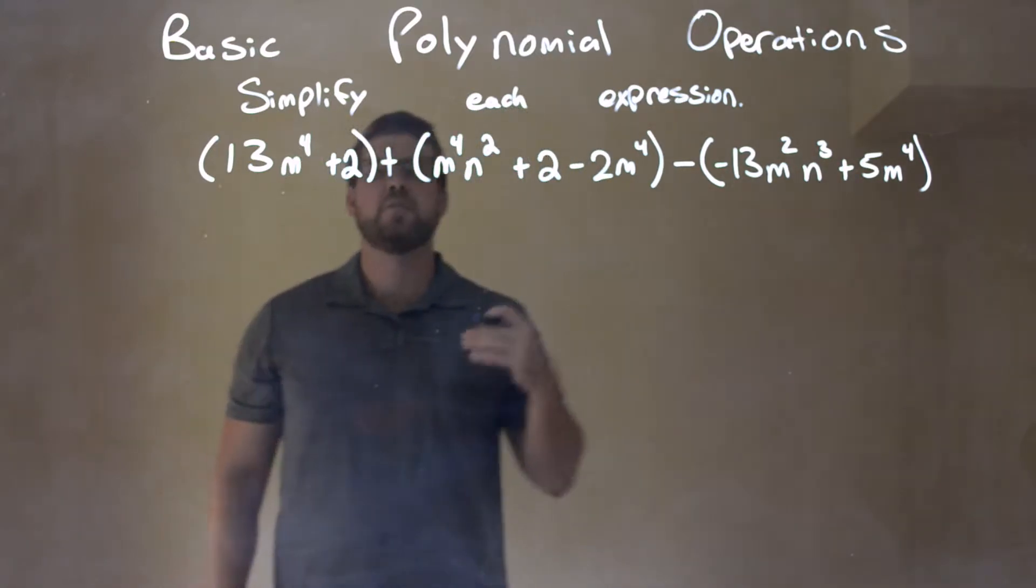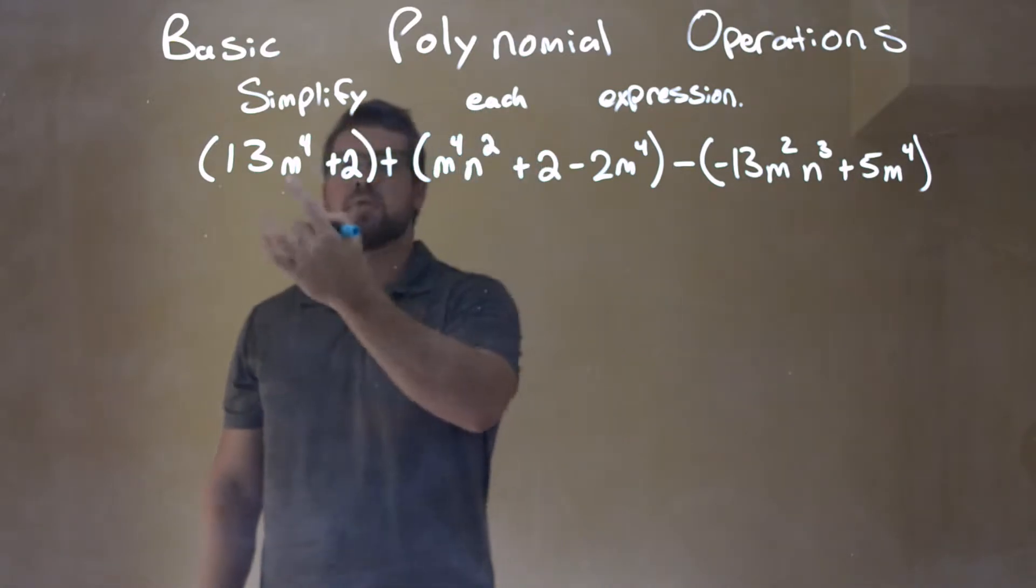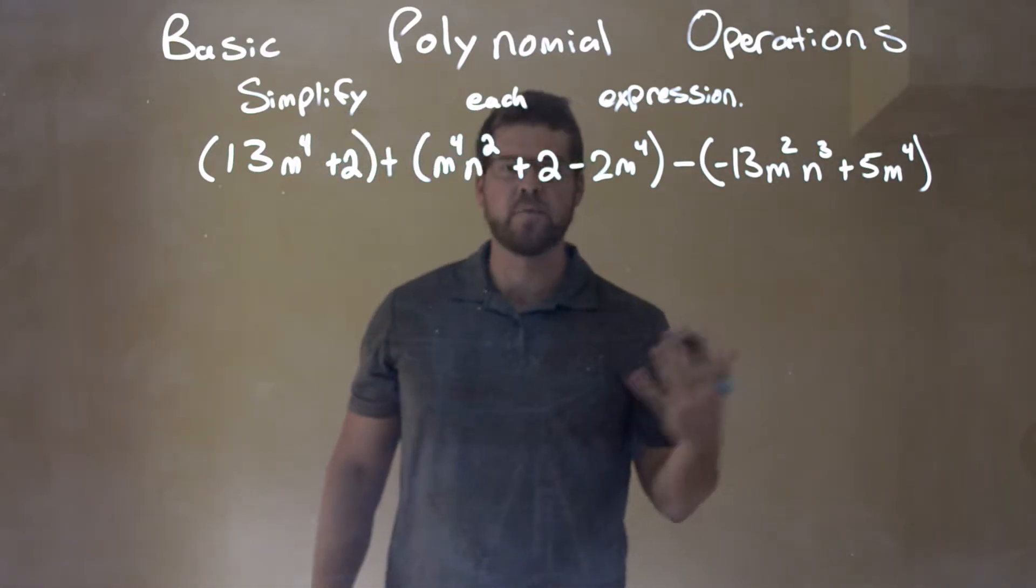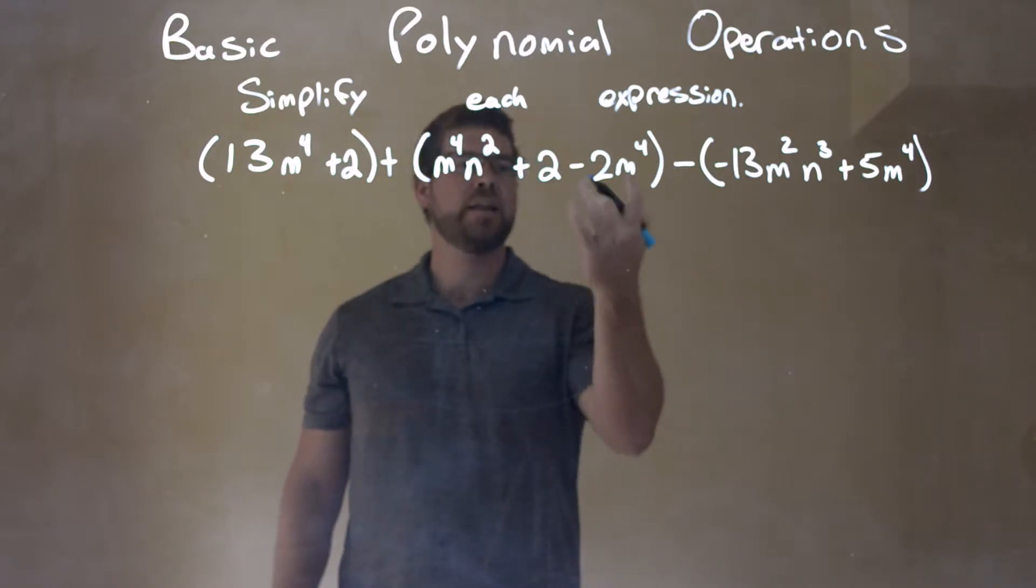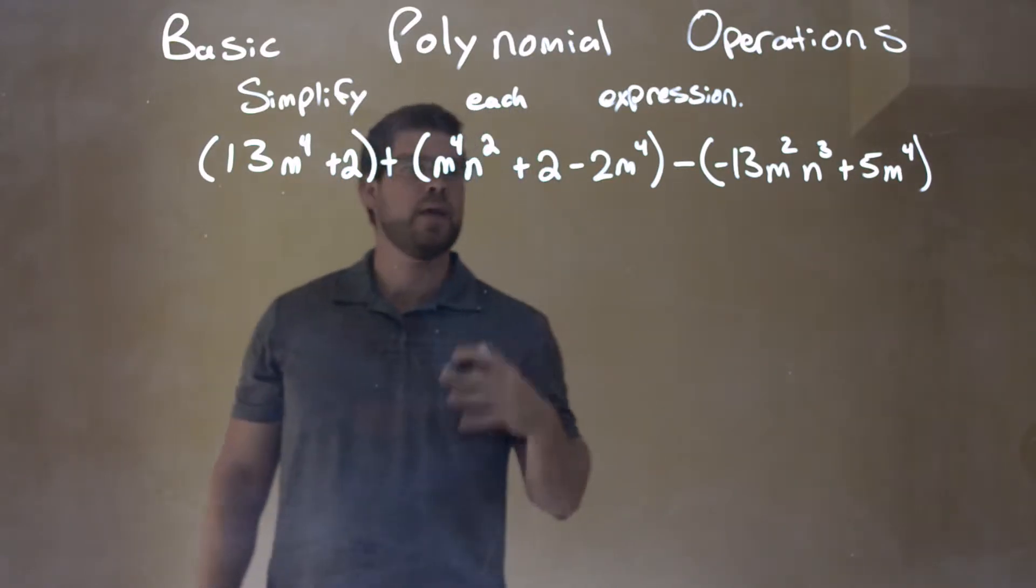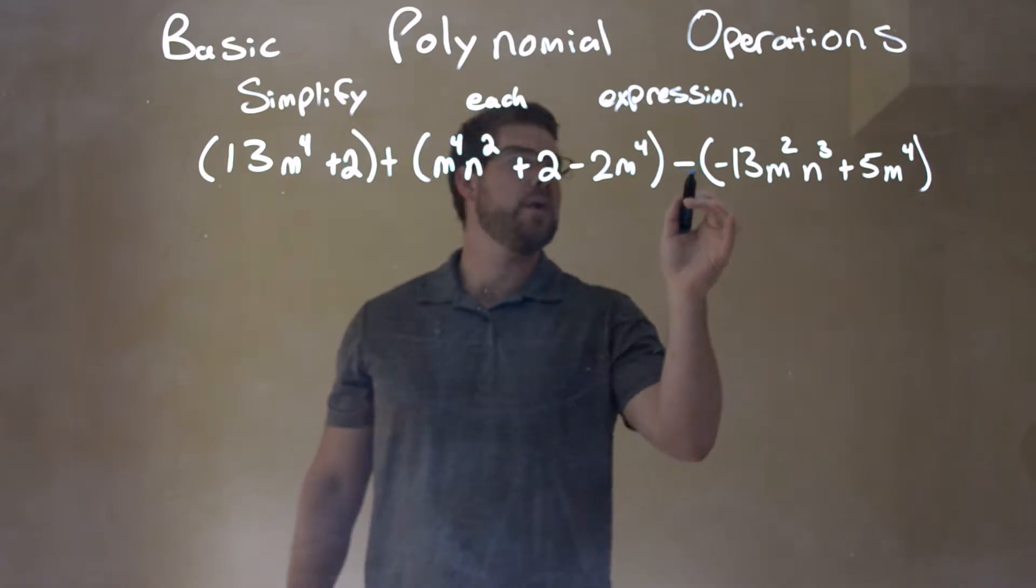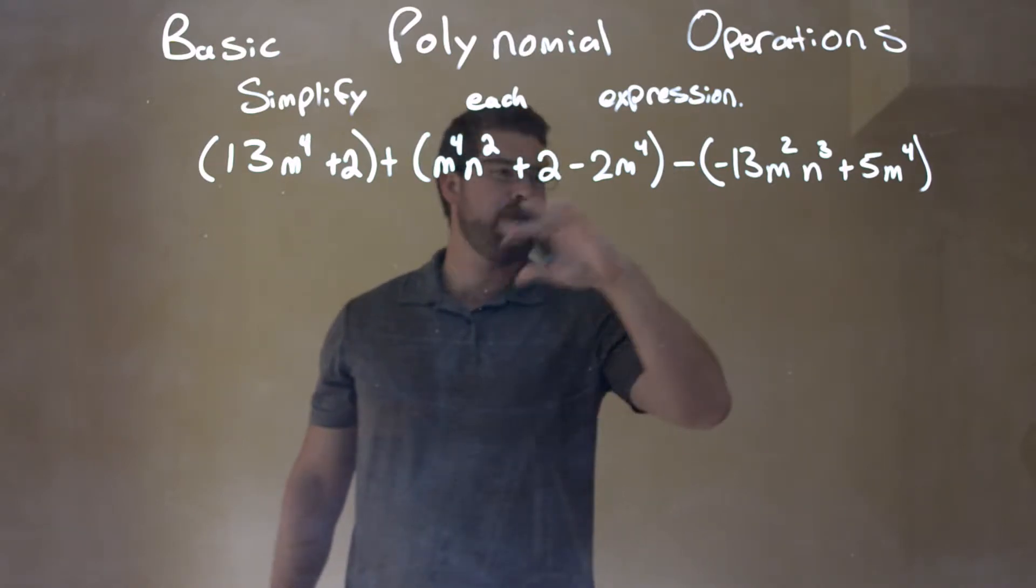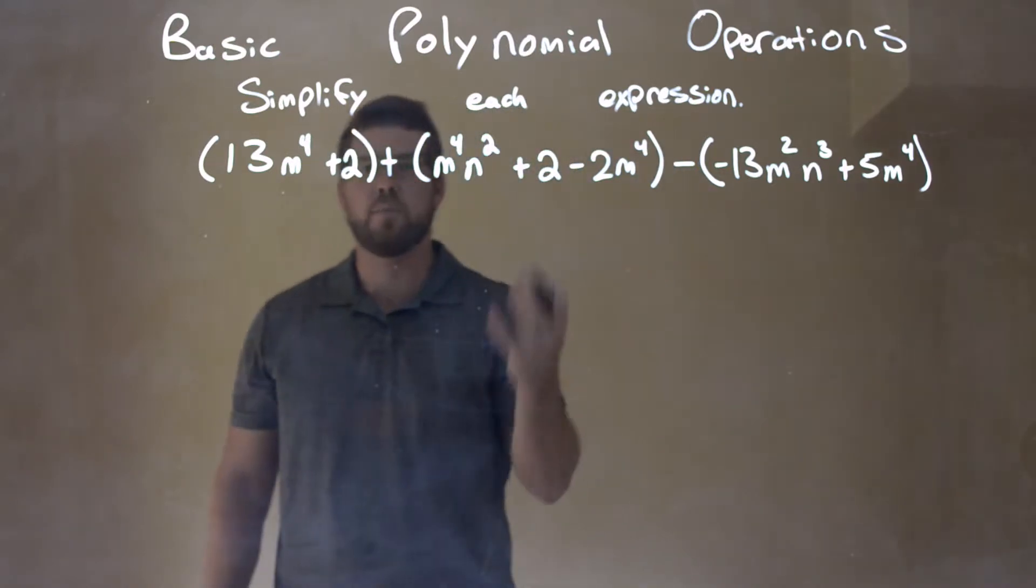What I want to do first is look within each parenthesis and see if there's a way I can simplify. I don't see any like terms within each parenthesis. So my next step is I actually like to distribute this subtraction sign to get everything positive, and then we get rid of all the parentheses.